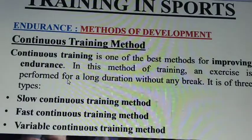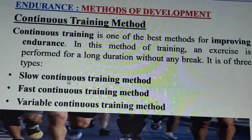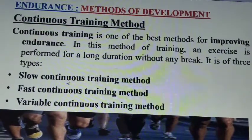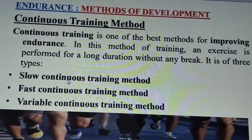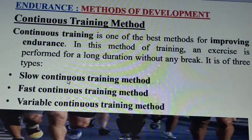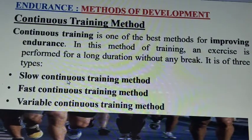Continuous training method is one of the best methods for improvement in endurance. In this method, training and exercise are performed for a longer duration without any break. It is of three types: slow continuous training method, fast continuous training method, and variable continuous training method. In variable continuous training, you alternate between fast and slow pace.